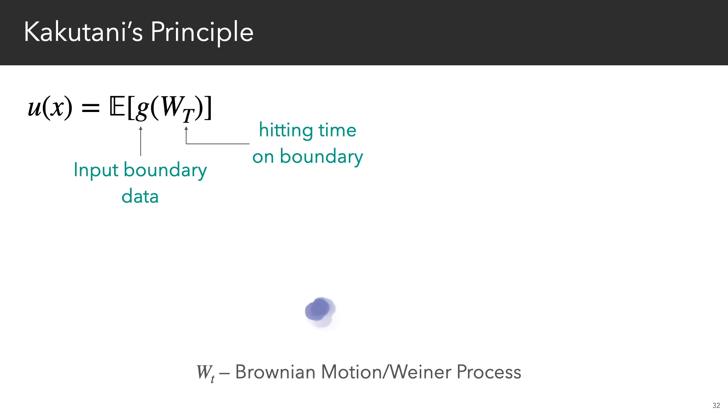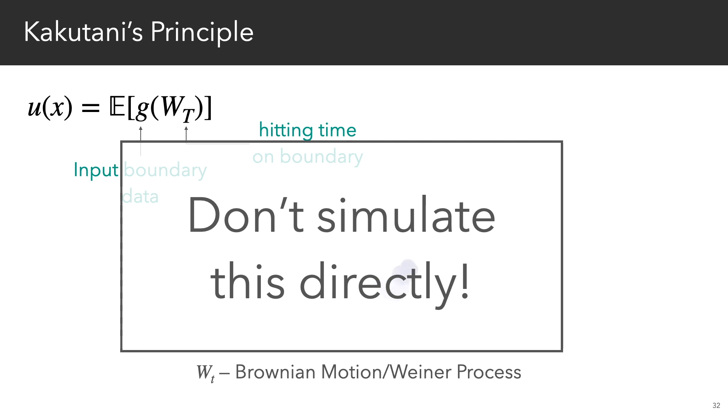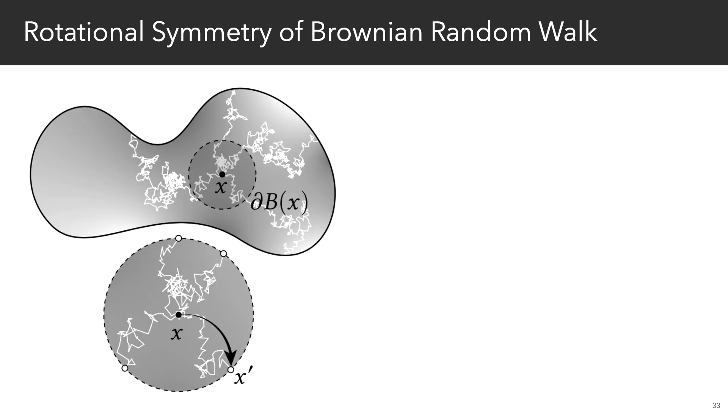So notice instead that by symmetry, a random walk starting at x is equally likely to exit at any point on the sphere centered on x, irrespective of what it does inside the sphere.